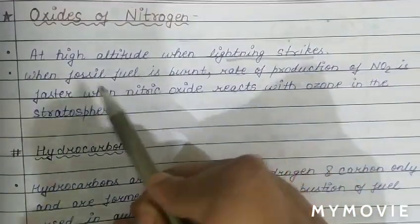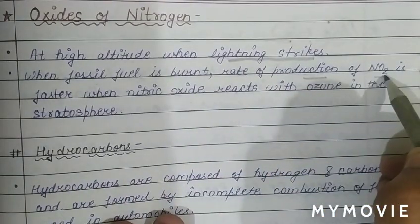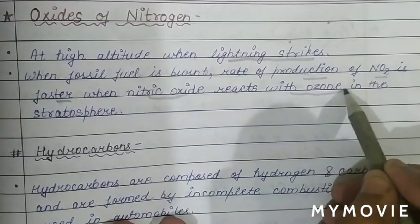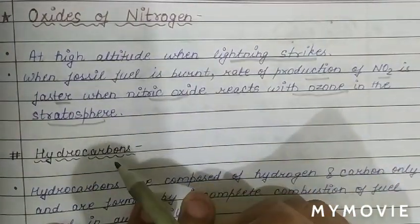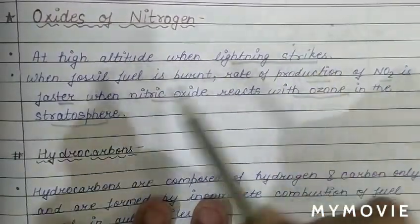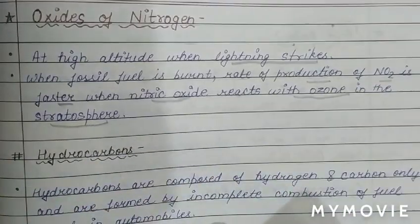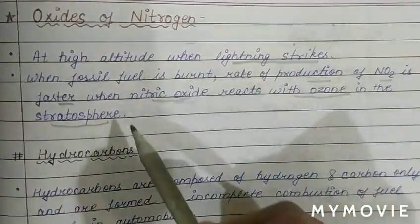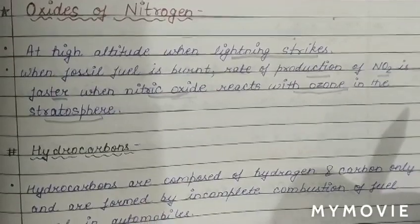When fossil fuel is burnt, the rate of production of NO2 is faster when nitric oxide reacts with ozone in the stratosphere. So oxides of nitrogen are formed at high altitude during lightning, during fossil fuel combustion, and when nitric oxide reacts with ozone in the stratosphere.